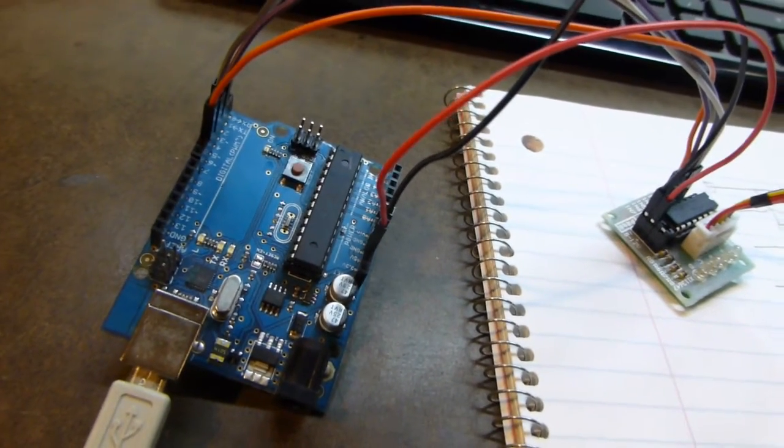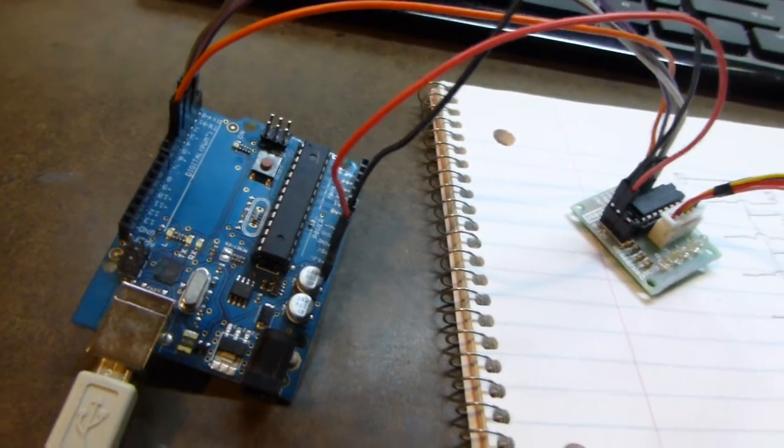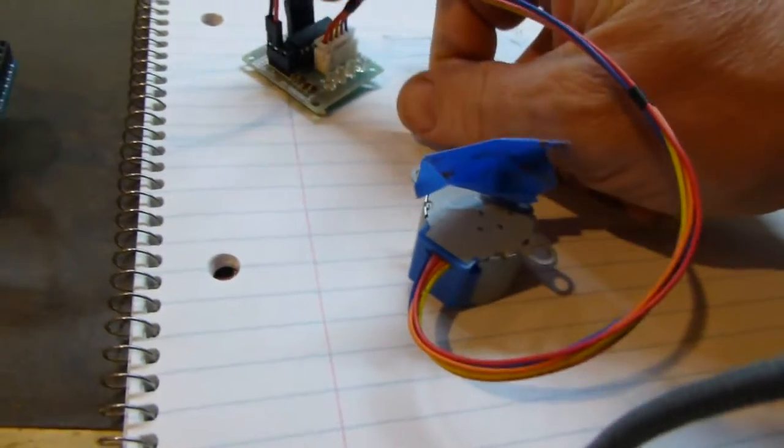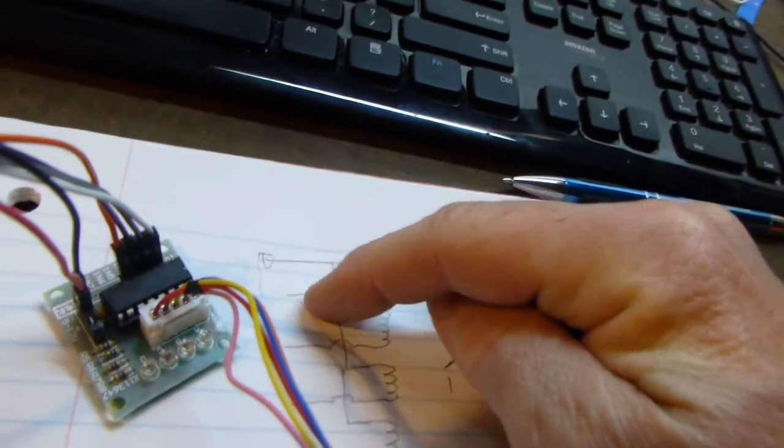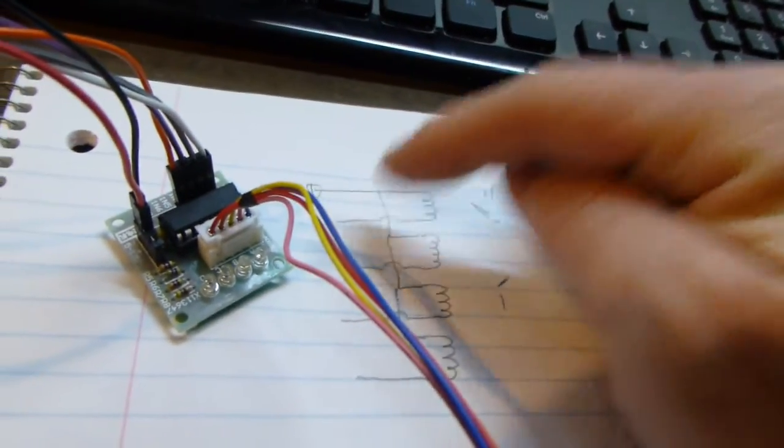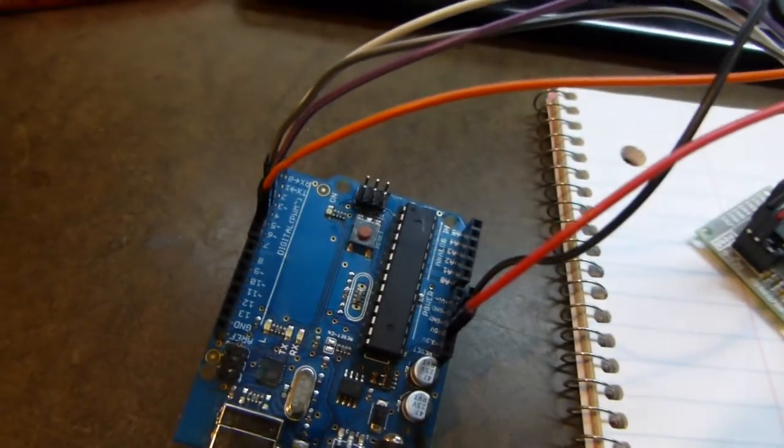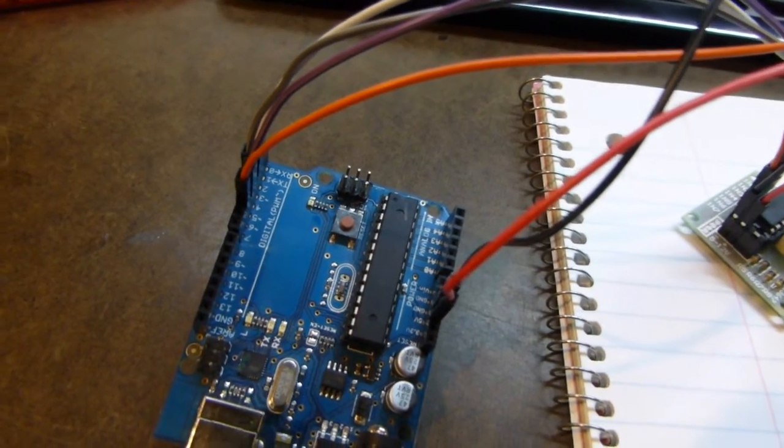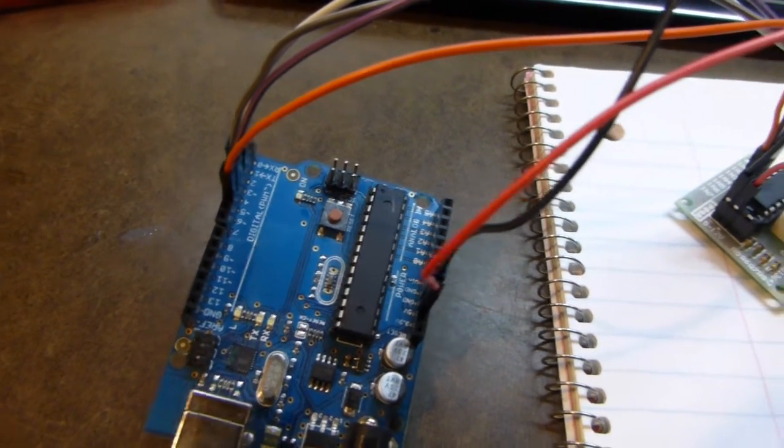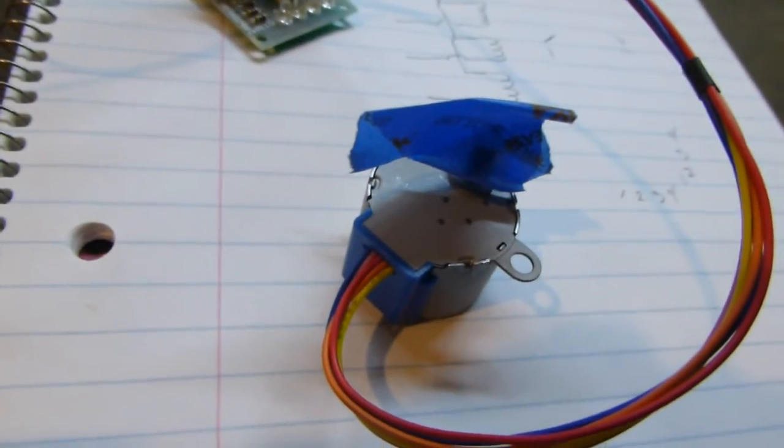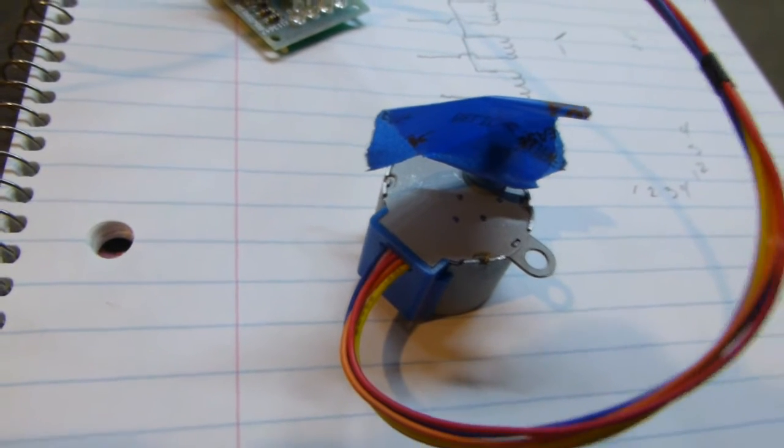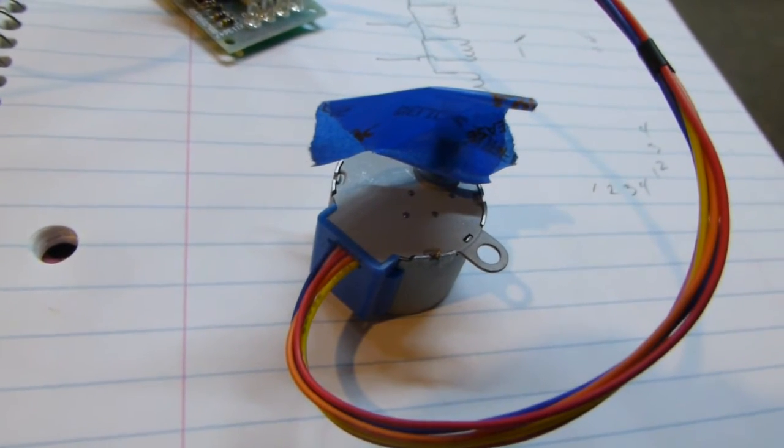One is because the Arduino really doesn't want to drive that much current. I took my volt meter and I measured the resistance between this wire and this wire, and I got about 53 ohms. If you work that out, it's about 100 milliamps. 100 milliamps is really pushing it for the output of this. The other reason, though...